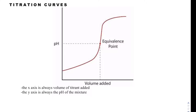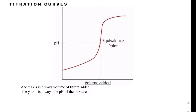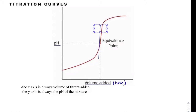We see titration curves all the time where the x-axis is volume added. Because the pH is increasing over time, base must be what is being added, and the y-axis is pH. To find the equivalence point from the graph, you find the flat region where the slope is very high or undefined, and essentially the midpoint of that area is your equivalence point. Then you can line it up with the pH to find the pH at your equivalence point.